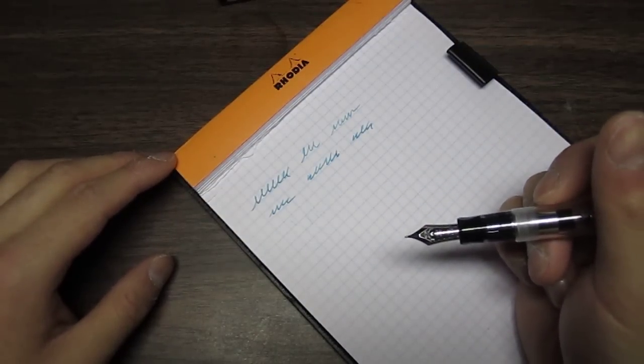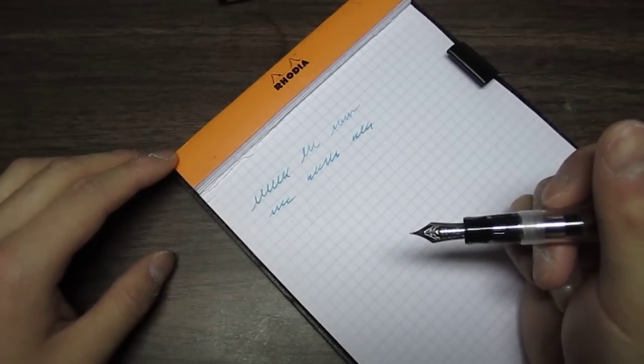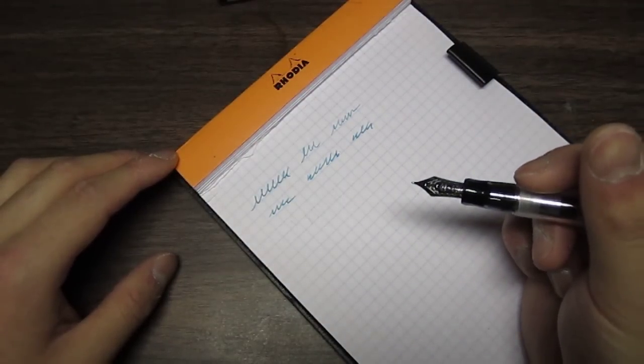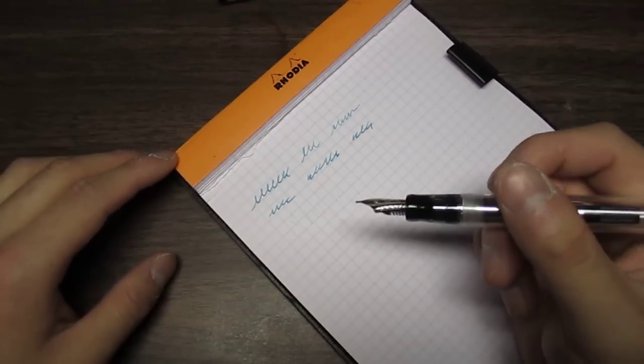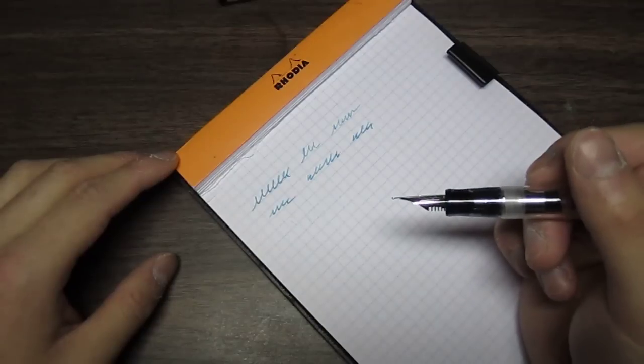Certain nibs, like on Lamy Safaris, a lot of people suggest that you can write upside down with it and it's okay because it is a very stiff nib and you won't really damage it that readily. I generally don't feel comfortable doing that with gold nibs though. I'm just a little nervous about bending them, I suppose.